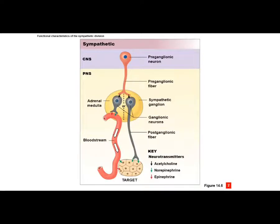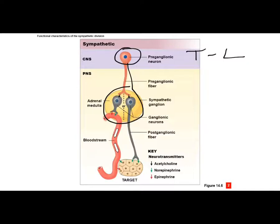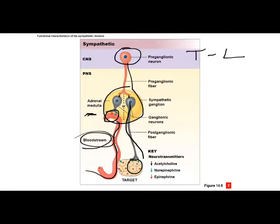The pre-ganglionic neuron starts in the central nervous system — thoracic lumbar — and synapses at the ganglion with other neurons. If the signal goes to the adrenal medulla, epinephrine and norepinephrine can be released directly into the bloodstream, allowing the signal to go all over the body. Alternatively, the signal can be sent down a post-ganglionic fiber to release neurotransmitters directly on a target — so sympathetic activity can be very general via the bloodstream, or very specific via direct nerve signaling.